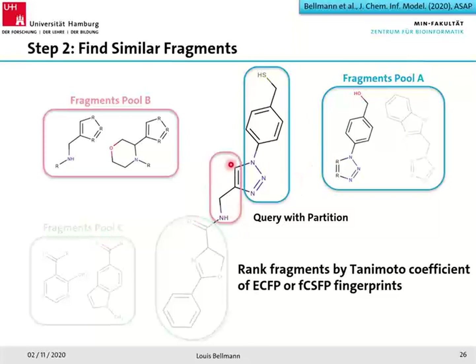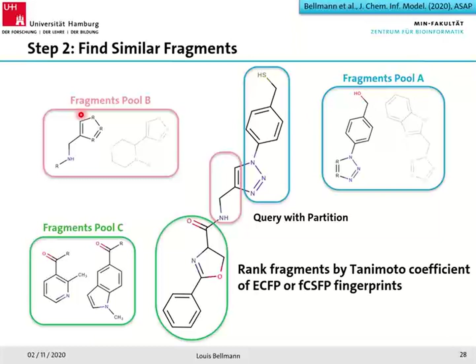For pool B, the substructure is identical to the fragment — the R-groups and their bonds exactly match, and the heavy-atom configuration is identical — so this fragment gets a Tanimoto score of 1.0, completely identical.